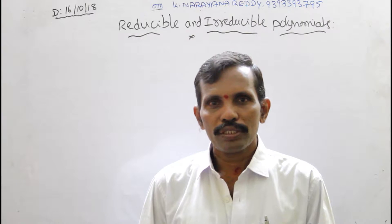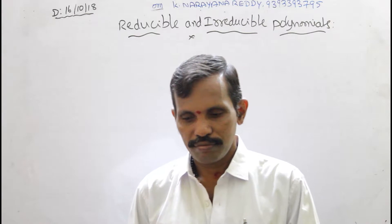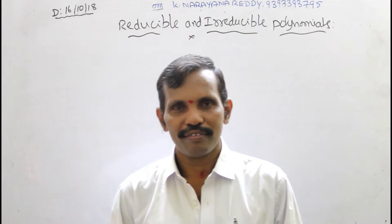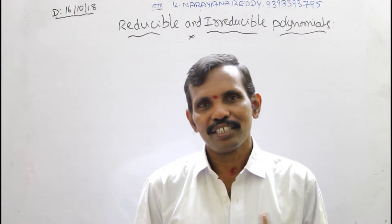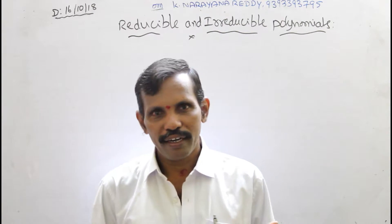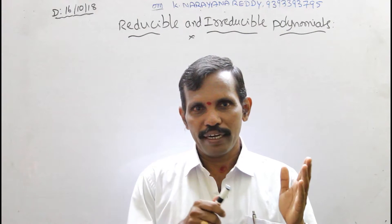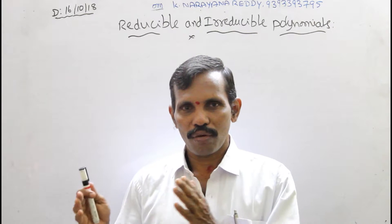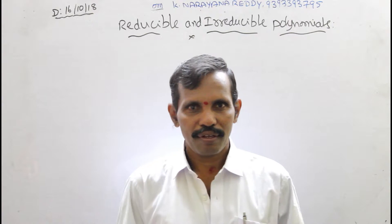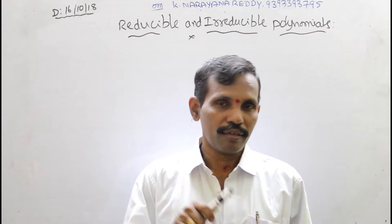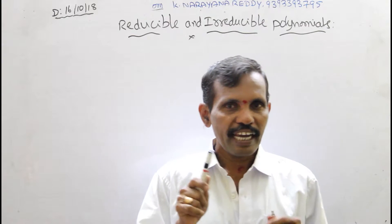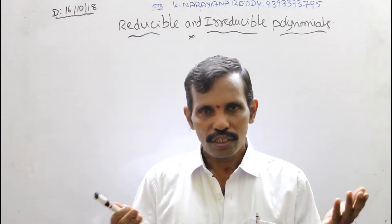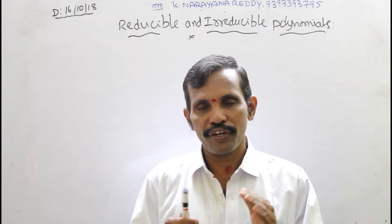Irreducible means we can't reduce. Reducible means we can reduce. Suppose we can divide number 10 into some parts: 3 numbers, 4 numbers, 2 numbers, 1 number. Number 1 can be divided into many parts. So that is the difference between Reducible and Irreducible.